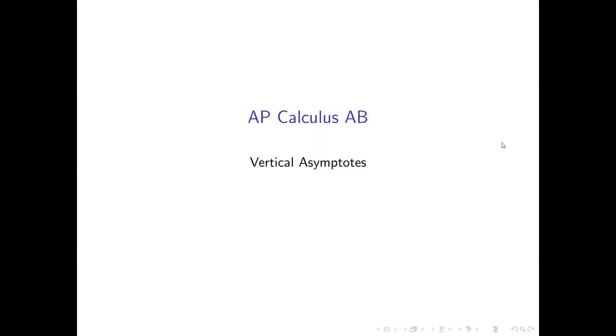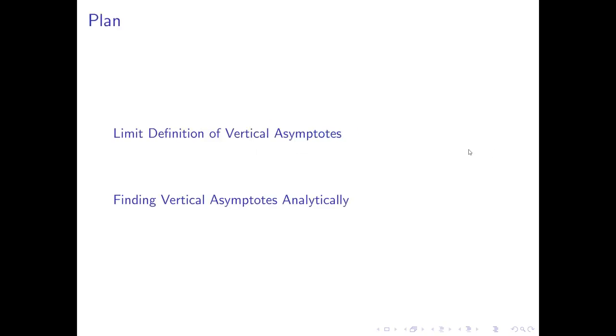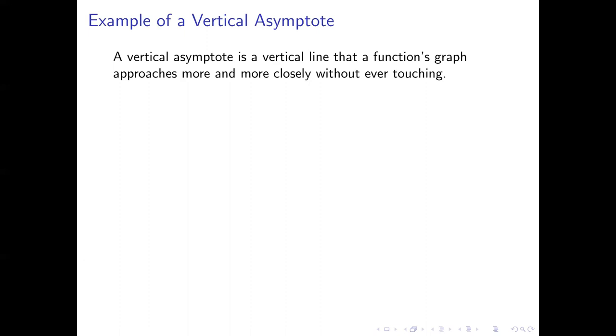In this lesson, we're going to take a look at vertical asymptotes, one property that a function can have that we can study using limits. We'll start by taking a look at a limit definition of a vertical asymptote, and then we'll see how we can find these analytically using a definition of a function. Recall from pre-calculus that informally we can say that a vertical asymptote is a vertical line that a function's graph approaches more and more closely without ever quite touching the line.